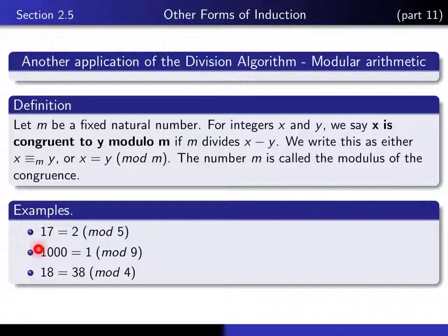So here are three examples. 17 is congruent to 2 modulo 5 because 17 minus 2, which is 15, is divisible by 5. 1,000 is congruent to 1 modulo 9 because 1,000 minus 1 is 999 is divisible by 9. And 18 is congruent to 38 modulo 4 because 18 minus 38 is minus 20, and that's divisible by 4.